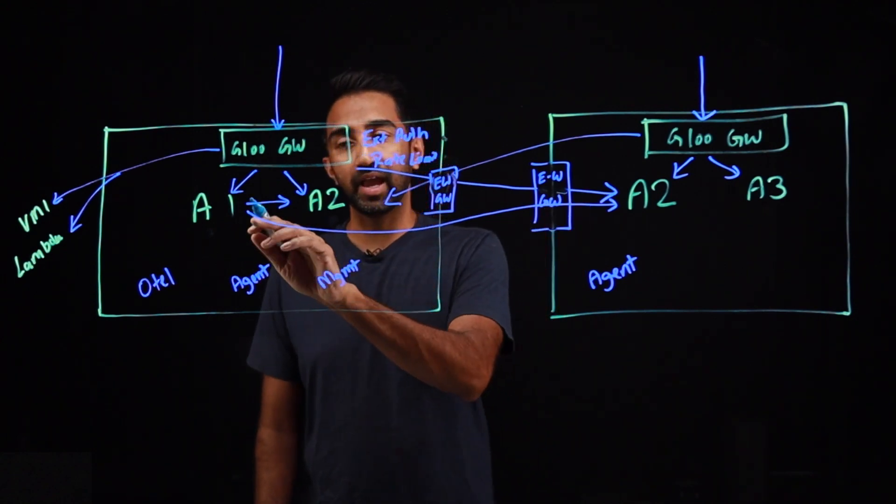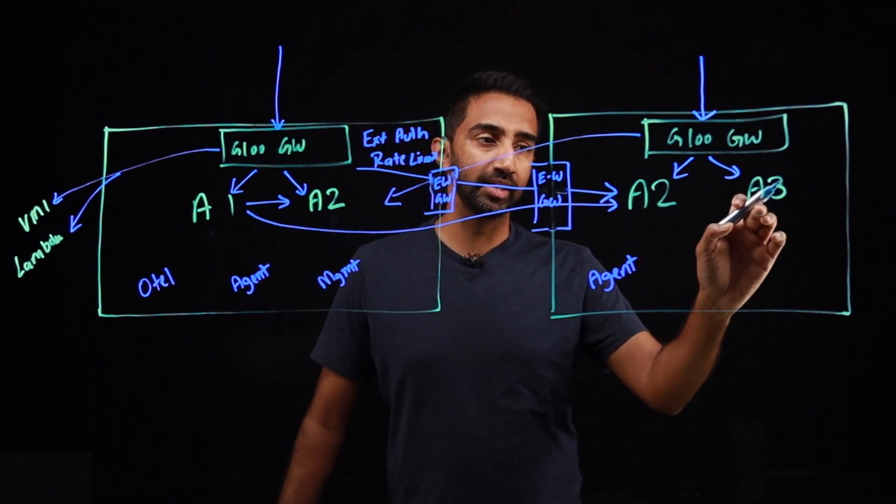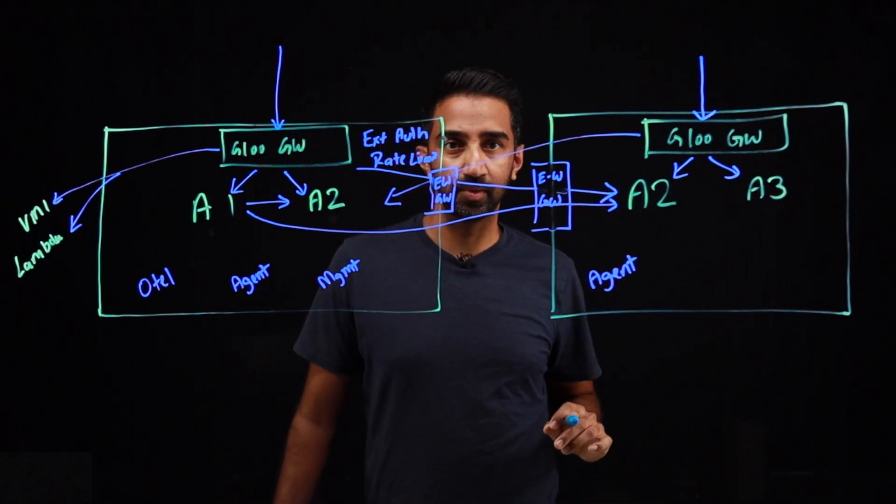Another thing you can do is A1 can also talk to A3 in this cluster, again, going through this east-west gateway to get to it.